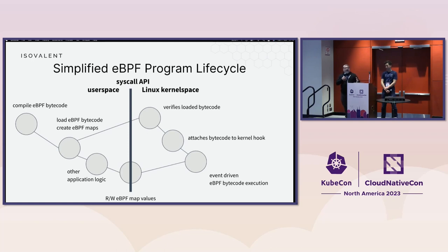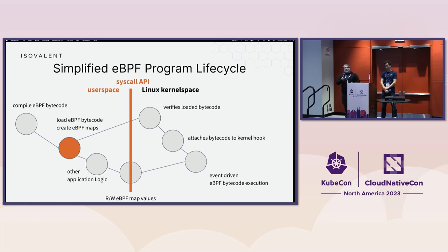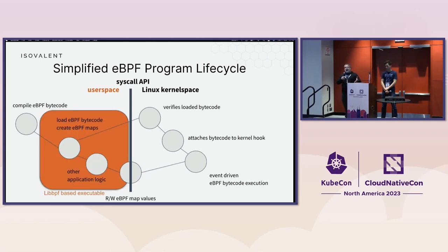Here's a really simplified lifecycle for what an eBPF program will look like. You start out in user space and you compile your code — usually C or Rust — into eBPF bytecode. Then you basically use the syscall APIs and load that bytecode into kernel space for the verifier to take over. Your application then does whatever other business logic it needs. In a modern program, we actually use libBPF — you can wrap those two pieces together into an application and the application will load the bytecode for you. You don't have to do it as separate steps; modern applications will do that as part of normal startup.